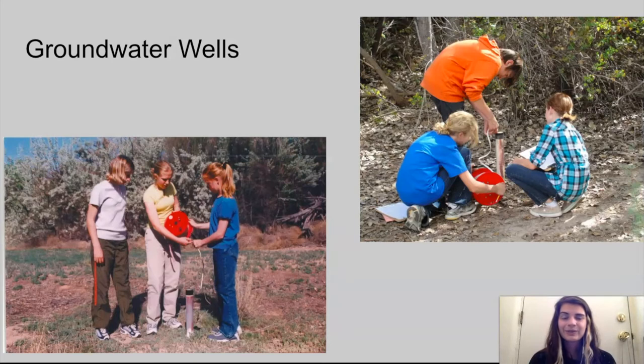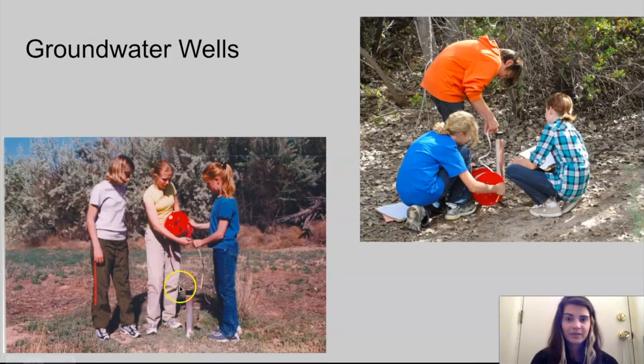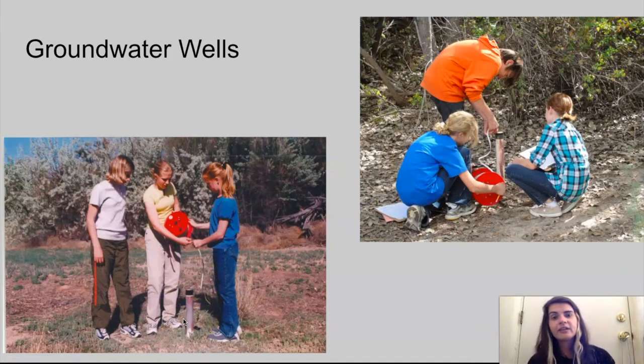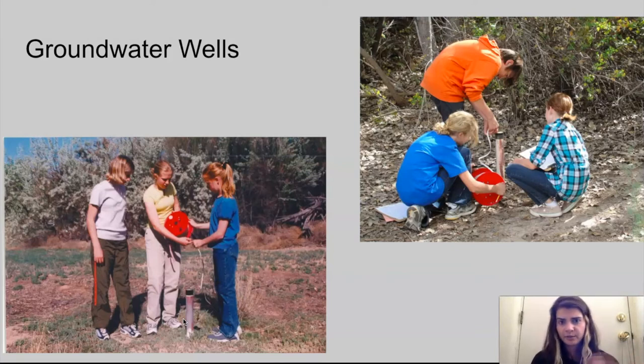Let's get into our data sets. Our first data set is groundwater wells. They look just like this. They have this PVC pipe sticking out of the ground that goes way down below ground and has slits in it that allow water to move through. Then we use this circular thing that has this measuring tape connected to it. We'll drop that down into the well, it has a sensor on the bottom.